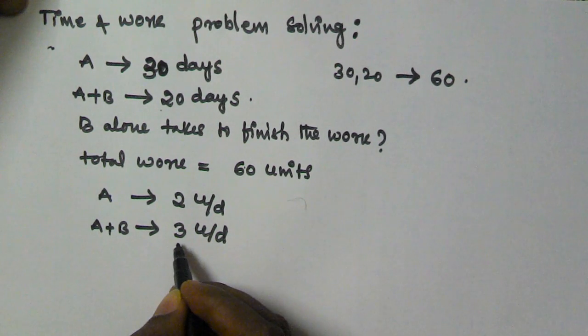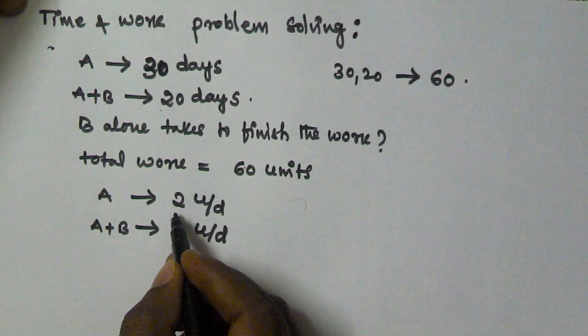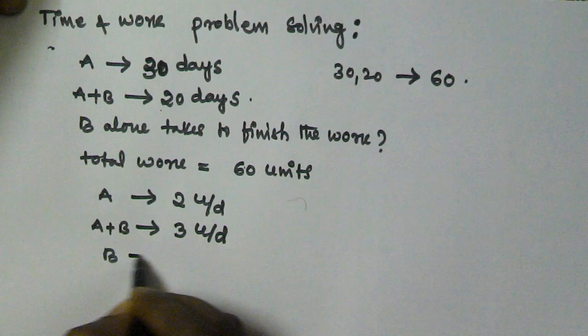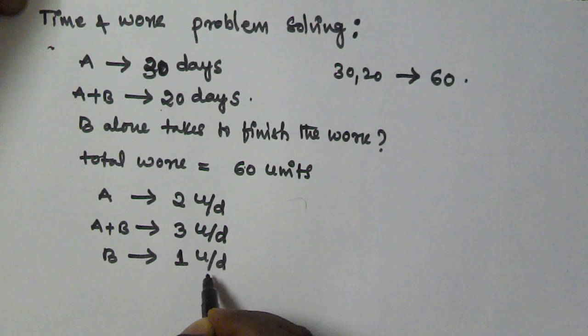If A and B working together finish 3 units per day, and A alone finishes 2 units per day, that means B alone finishes 1 unit per day.